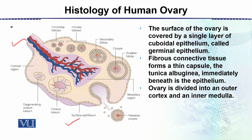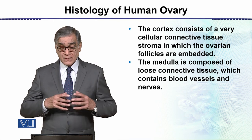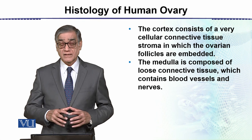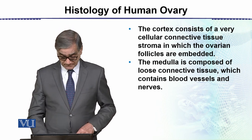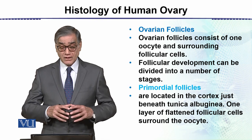The ovary is divided into two regions: the outer cortex and the inner medulla — exactly like in the kidney. The cortex consists of cellular connective tissue stroma in which the ovarian follicles are embedded. The medulla is composed of loose connective tissue which contains blood vessels and nerves. The ovarian follicles consist of one oocyte and surrounding follicular cells.